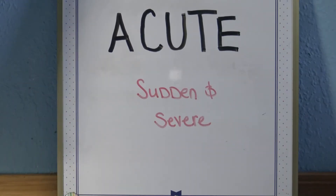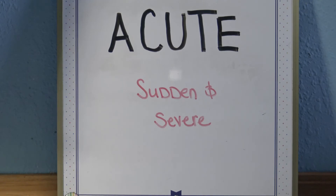Acute — acute is a sudden and severe situation, like an asthma attack. It's something that you're expected to recover from, but it is sudden onset.